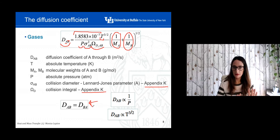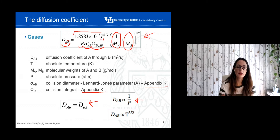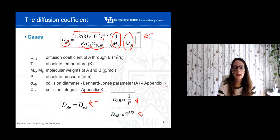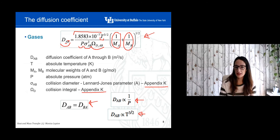From this expression we also get two important conclusions. The diffusivity coefficient is proportional to the inverse of the pressure, and the diffusion coefficient is proportional to the temperature raised to 3.5. That's very important because if you know the diffusion coefficient at, say, 300 K and your problem operates at 600 K, you just need to use this relationship to calculate the new diffusion coefficient at 600 K.